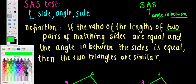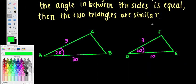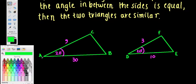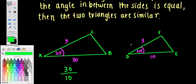Two sets of matching sides must be in the same ratio and the angle between them must be the same. Looking at the diagram, we compare corresponding sides: the bases give us 30 over 10. Checking the other pair of sides — we have 9 and 3 — so 9 over 3. Is 30/10 equal to 9/3? Yes: 30/10 = 3 and 9/3 = 3. They are equal.